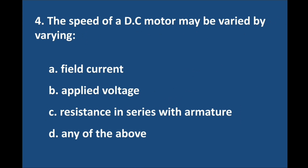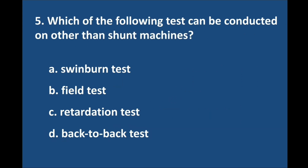Question number 4. The speed of a DC motor may be varied by varying? Question number 5. Which of the following tests can be conducted on other than shunt machines?